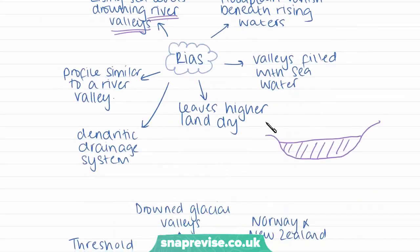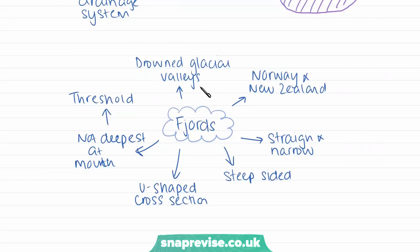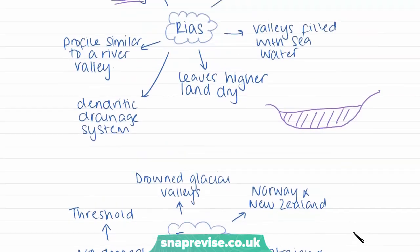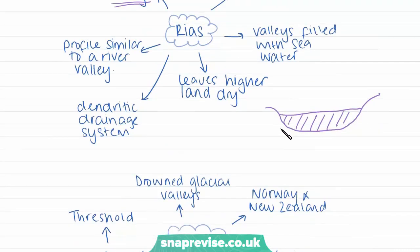Now looking at fjords: in comparison to rías, fjords are drowned glacial valleys rather than river valleys — they formed where glaciers used to be. We find a lot of them in Norway and New Zealand. They are very straight, narrow, and very steep-sided because glacial valleys tend to be much deeper than river valleys — glaciers have greater erosive power so they erode downward more. The profile of a fjord is therefore a very steep U-shaped valley, and it is narrower and steeper in comparison to the more gently-sided ría.